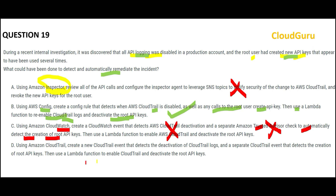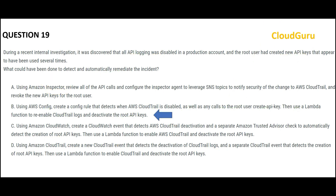Option D is wrong because they are saying we will use a CloudTrail new event to detect deactivation of CloudTrail logs itself. That is like asking a person — when you sleep, let me know that you have slept. Will it happen? No. If the person already slept, how will they tell you they slept? So this is wrong. Option B is my final answer.